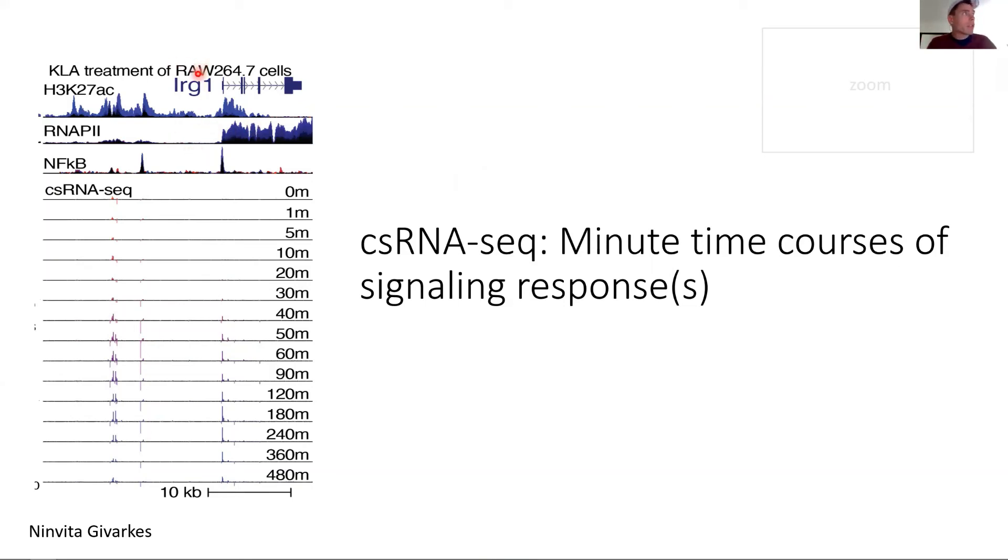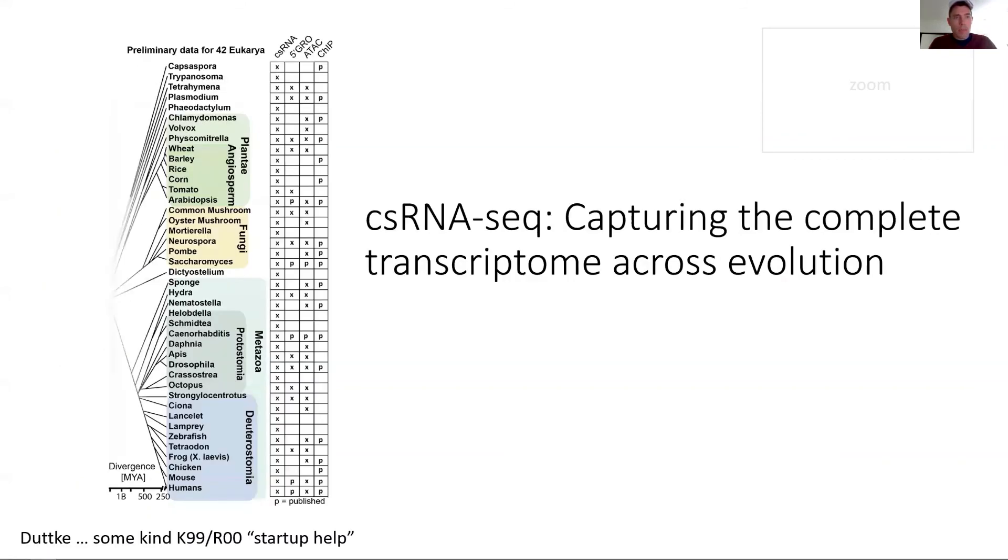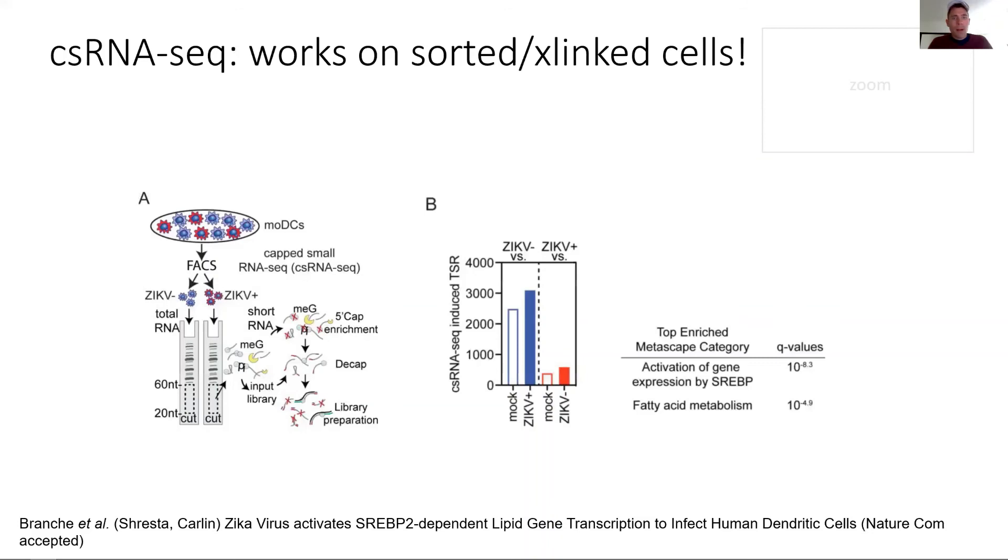Another thing that's pretty cool is CSRNAseq—you can actually get new time courses of signaling. This time course was done by an undergrad in the lab. Macrophages, or RAW cells which are pseudo-macrophages, were stimulated with KLA. Then we looked at these NFκB binding enhancers and you can really see which enhancers fire first, which come forward, how they go up and down, and basically co-regulated domains. The idea is it's very easy to do a lot of samples and time courses.